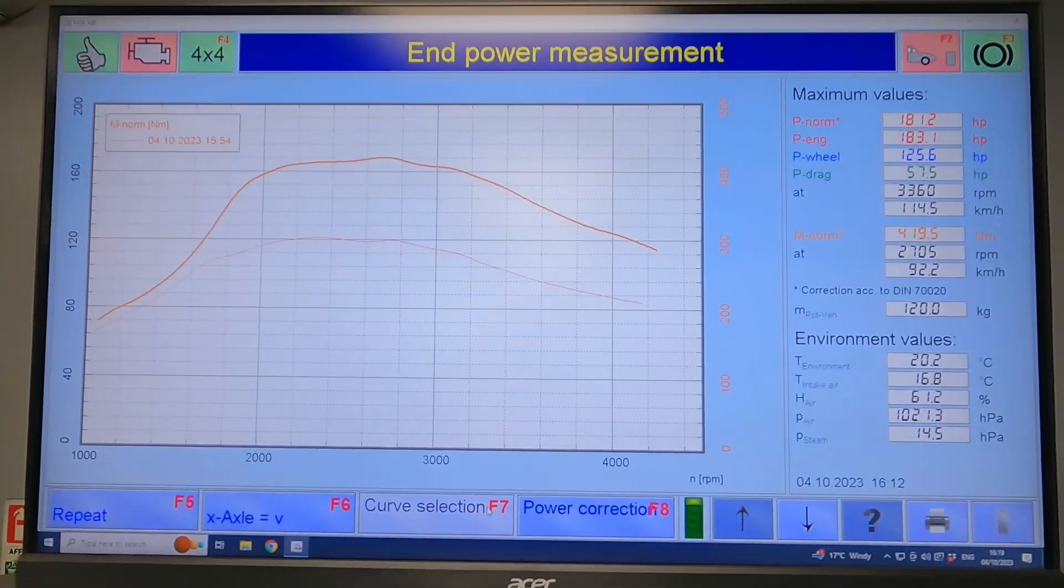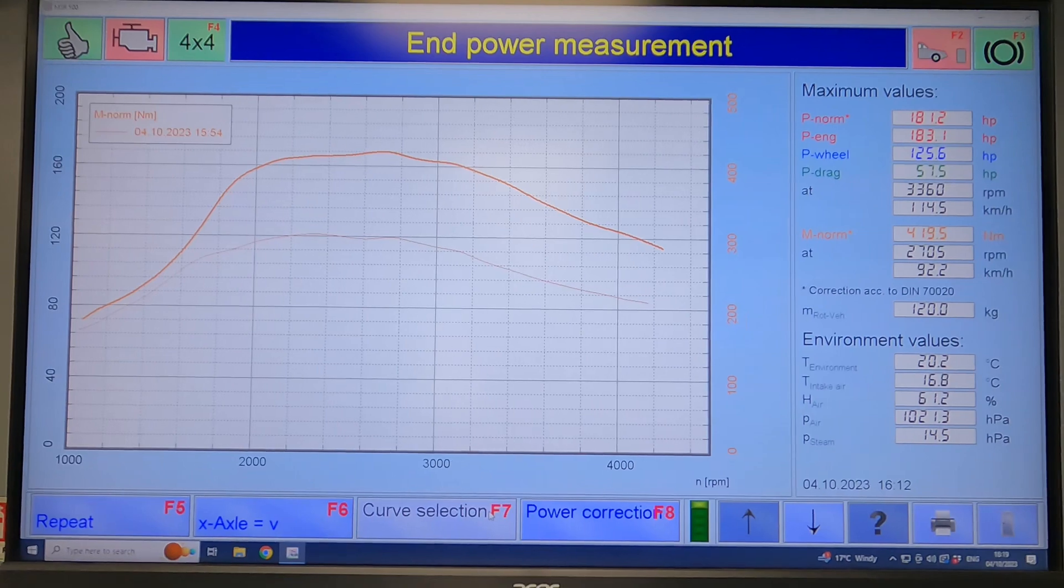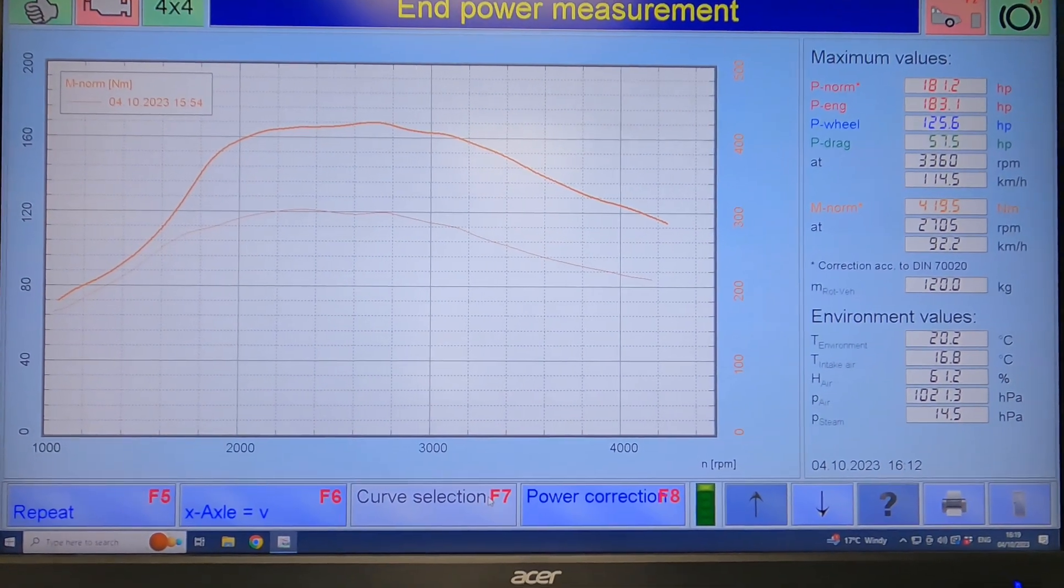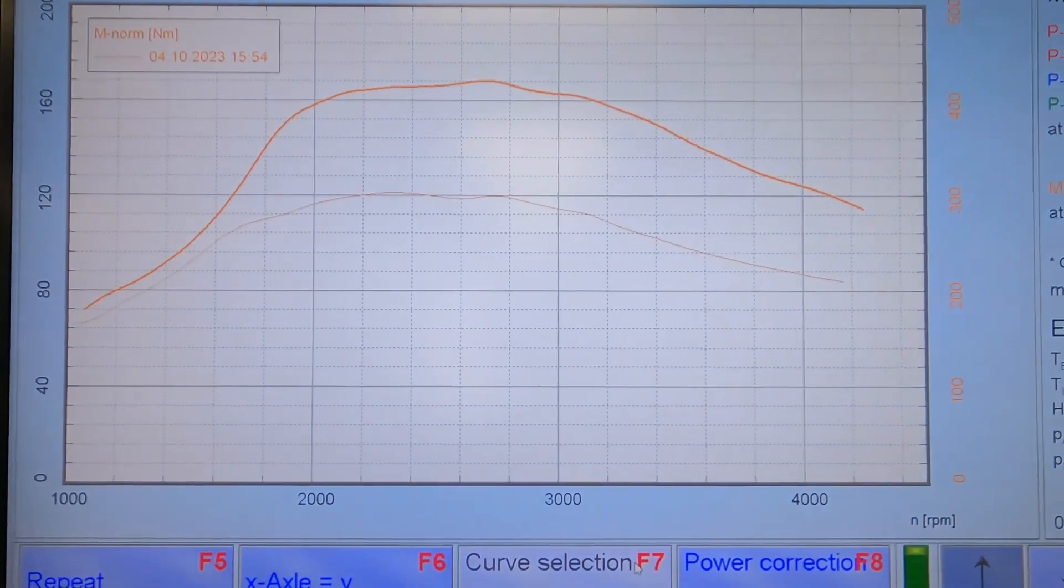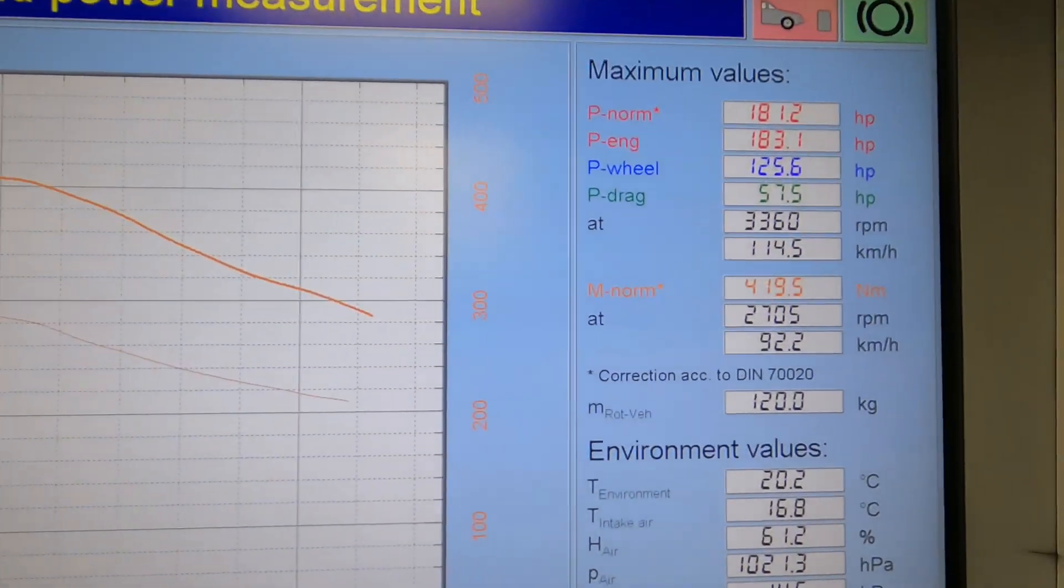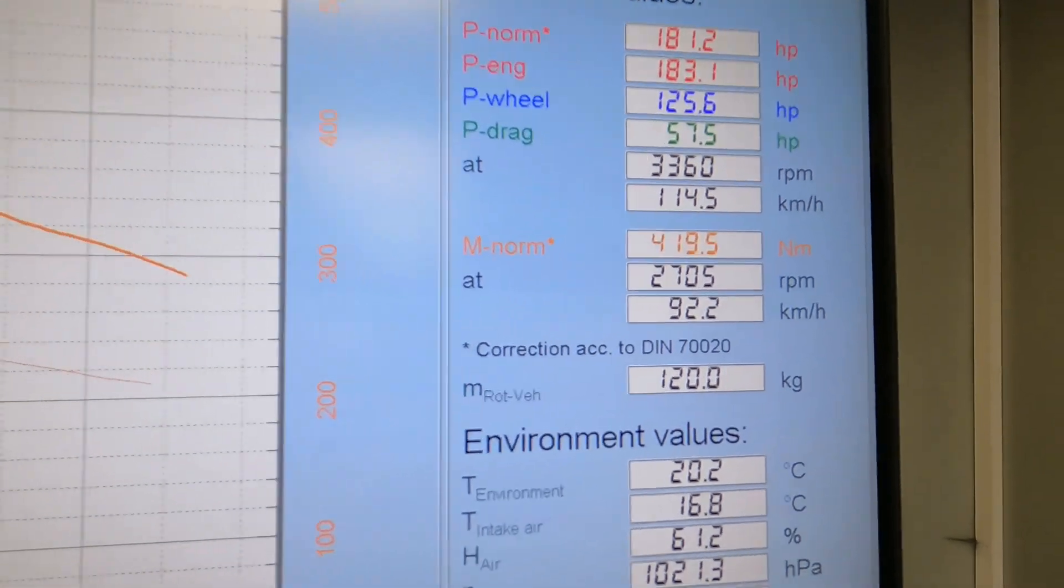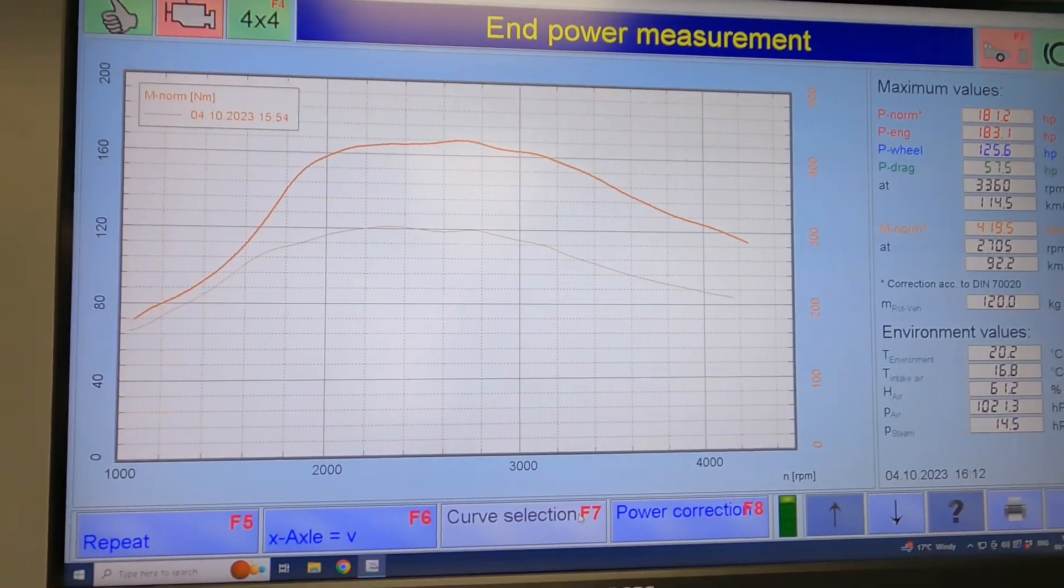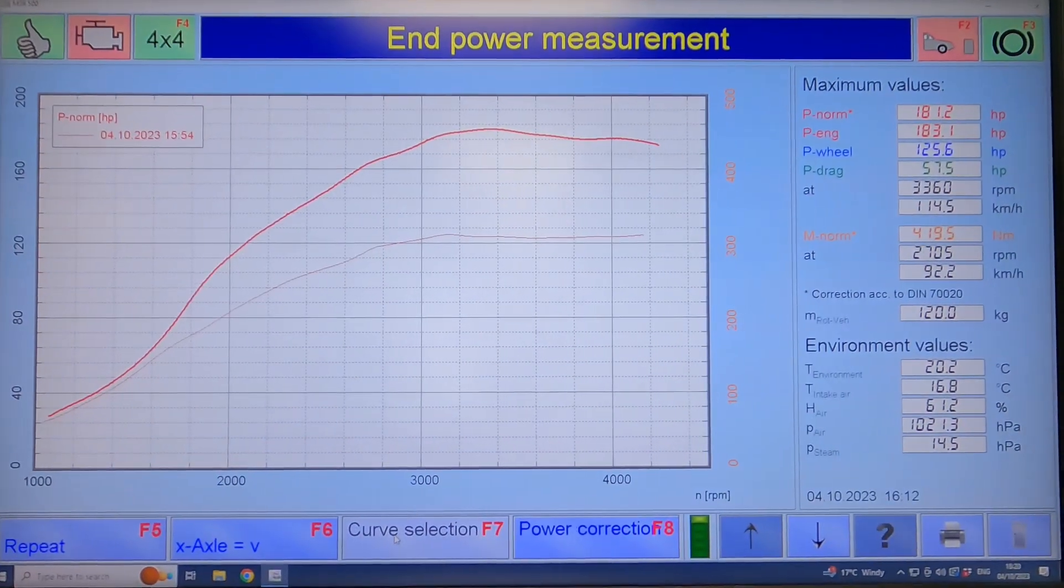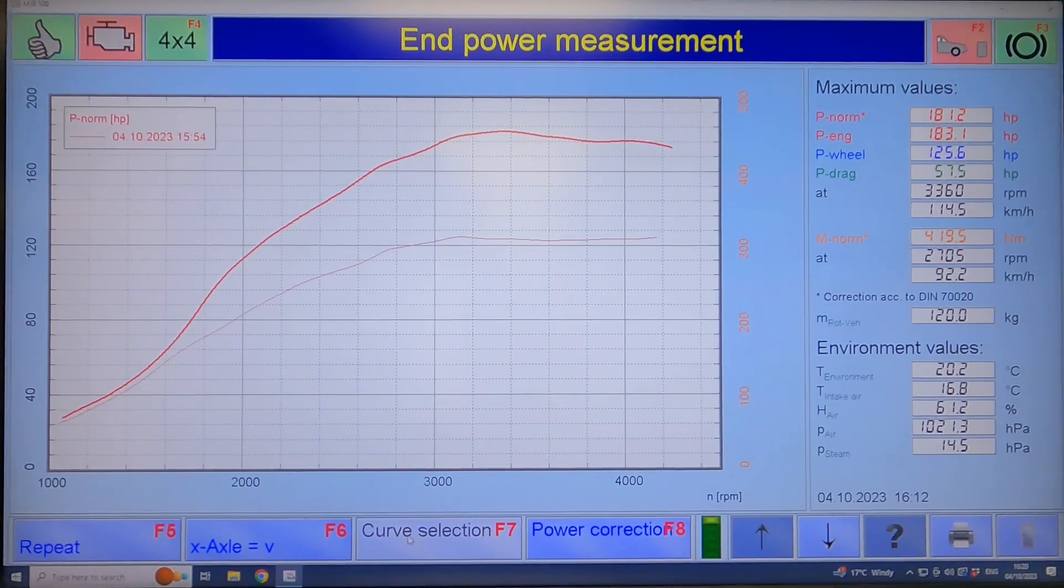So for those that are interested in seeing the difference in a different format, without all of the other data on the power graph, this is torque. This is the difference between remap and standard. So 419 Newtons versus 300 Newtons standard. Here we have the difference between horsepower and standard untuned. Massive difference.